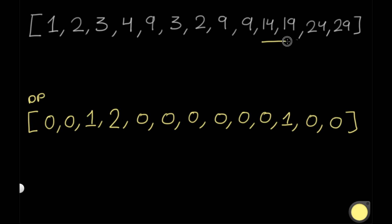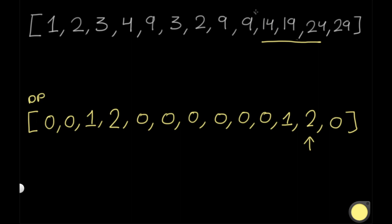Now we move the window to 14, 19, 24. This is also an arithmetic sequence — 14 plus 5 is 19, and 19 plus 5 is 24. We know the difference is the same since we're using the same two elements 14 and 19 from the previous slice. We go to the previous DP element which is 1 and add 1, giving us 2. One slice is 9, 14, 19; another is 14, 19, 24; and the final slice is 9, 14, 19, 24.